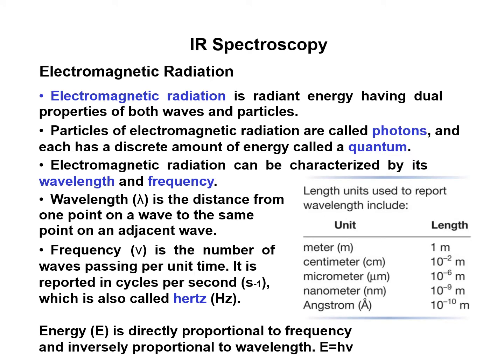Electromagnetic radiation is radiant energy having dual properties of both waves and particles. Particles of electromagnetic radiation are called photons, and each has a discrete amount of energy called a quantum. Electromagnetic radiation can be characterized by its wavelength and frequency. Wavelength, represented by lambda, is the distance from one point on a wave to the same point on an adjacent wave. Frequency is the number of waves passing per unit time, reported in cycles per second — seconds to the minus one — also called Hertz.